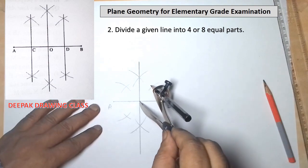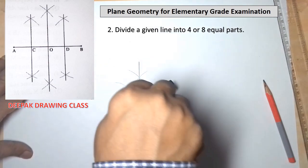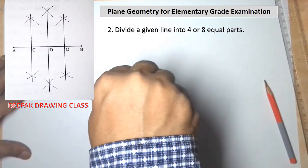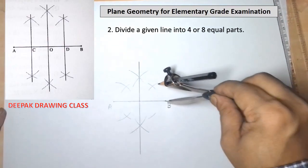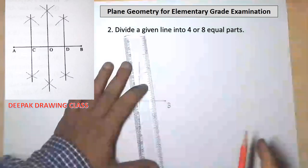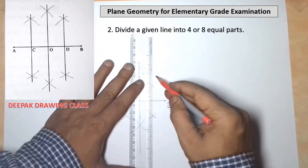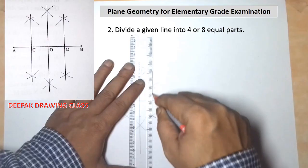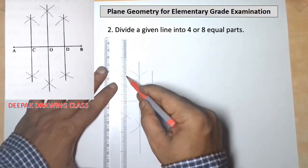Similarly divide the line OB into further two equal parts. Join the arcs by drawing a line passing through them.